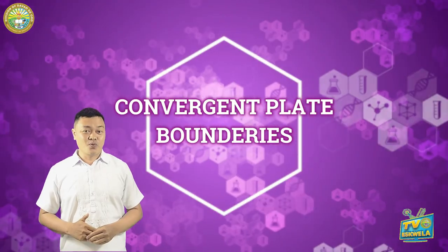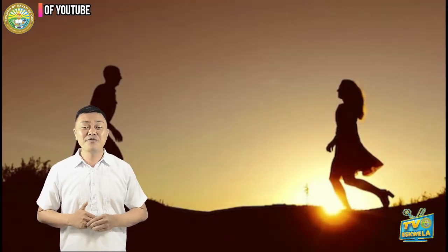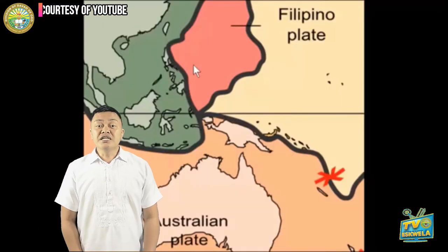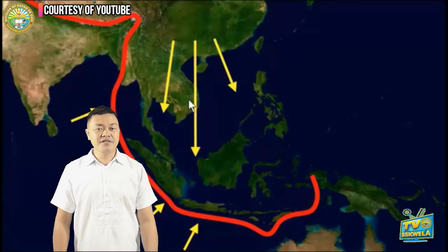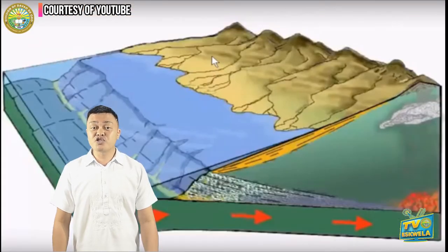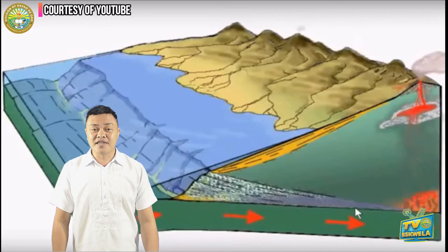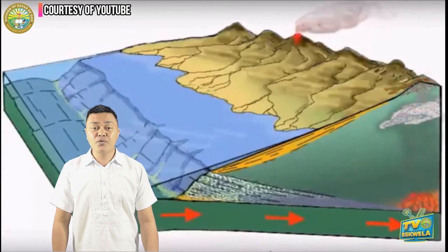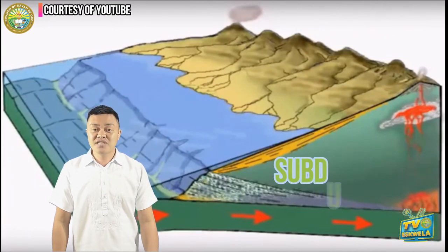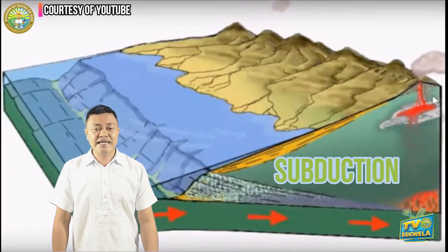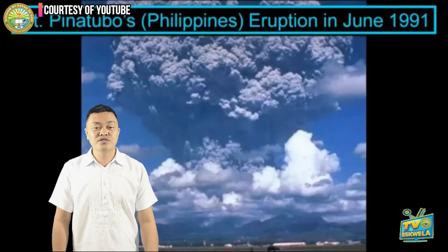Convergent plate boundary is when two plates move toward each other, like two people hugging and embracing each other hard. Our country the Philippines is a product of convergent plate boundary — a meeting of the Philippine plate and the Eurasian plate. The oceanic crust here is thinner and heavier because of its basaltic component. The continental crust is thicker but lighter. The lighter continental plate floats over the top of the oceanic plate, forcing it down and allowing magma to well up from the Earth's interior. The bending of oceanic crust toward the mantle is called subduction. The oceanic crust melts because of too much heat and pressure in the mantle, like what happened with Mount Pinatubo in June 1991.